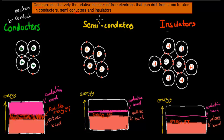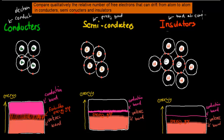Semiconductors are kind of halfway in between conductors and insulators, so they're pretty good at conducting electricity, but not as good as conductors. Insulators are going to be really bad at conducting electricity — that means they have high resistance, and high resistance means bad at conducting electricity.